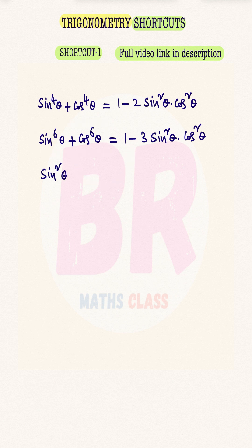Not only this, sin²θ + cos⁴θ = 1 - sin²θ·cos²θ. Sin⁴θ + cos²θ = 1 - sin²θ·cos²θ.